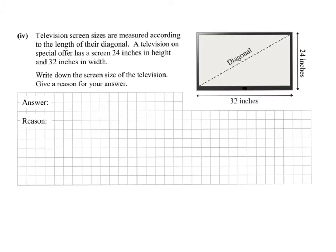This part of the question is different — it asks about Pythagoras. Television screens are measured according to their diagonals, so when you buy a TV that's what's measured. This television has a length of 32 inches and a width of 24 inches. What is the diagonal? You have to spot that this section is actually a right-angle triangle.